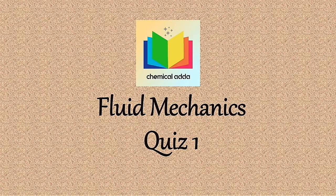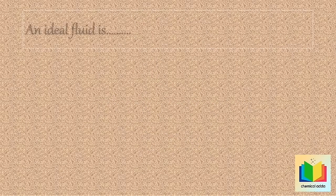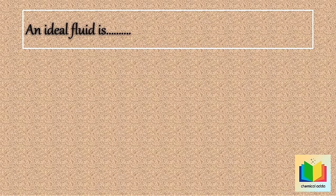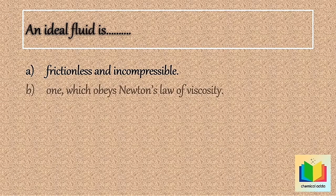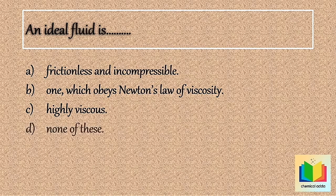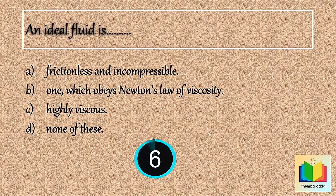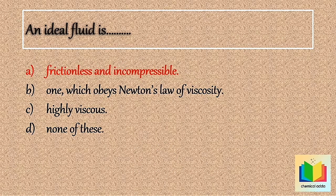First question: An ideal fluid is — Option A: frictionless and incompressible. Option B: one which obeys Newton's law of viscosity. Option C: highly viscous. Option D: none of these. Your time starts now... Stop. The answer is Option A: frictionless and incompressible.